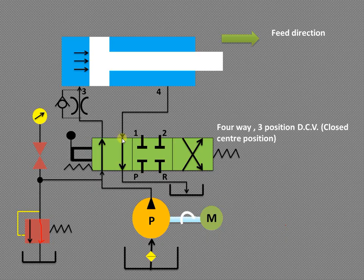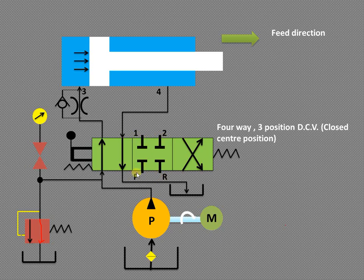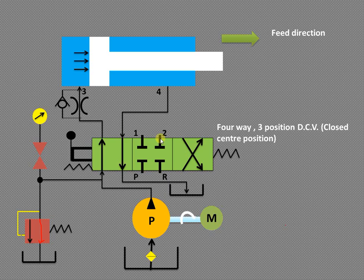Now this is the most important part of any hydraulic circuit. Here we have shown four ways: P, R, 1, and 2. P stands for the pump port, R for the receiver port, port 1 is the inlet to the cylinder, and port 2 is the outlet from the cylinder or vice versa. This is the center position and it is a block position.